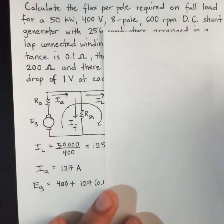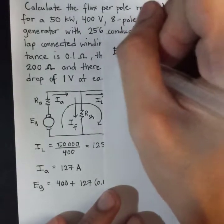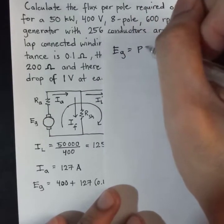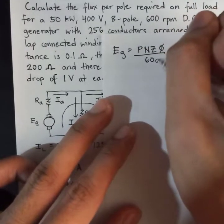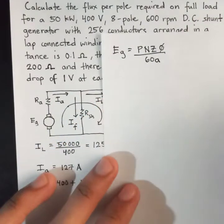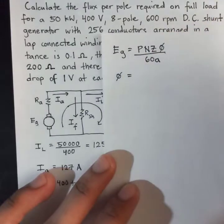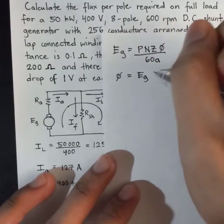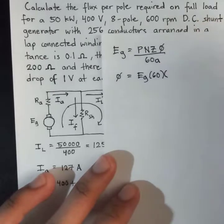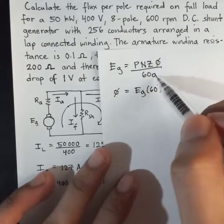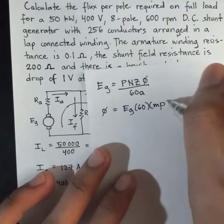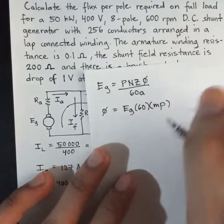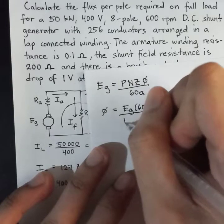Now, recall the formula for the EMF generated in DC generators, that is EG equals P times N times Z times phi over 60A. So, solving for the flux, that is phi equals EG times 60A over P times N times Z. Since this is lap connected winding, A equals P, so they cancel out.